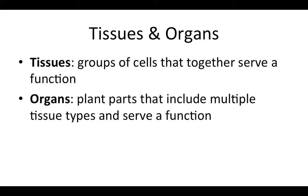Before we get into the details of different tissue types, let's define tissues and organs. Tissues are groups of cells that together serve a function. In animals we often say that the cells would have to be of the same type, but we will see with plants that we can have multiple cell types together forming a single tissue. An organ, then, is going to be a plant part that includes multiple tissue types and serves a function, and we'll see an example on the next slide.